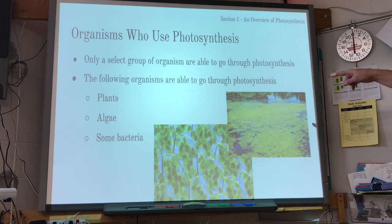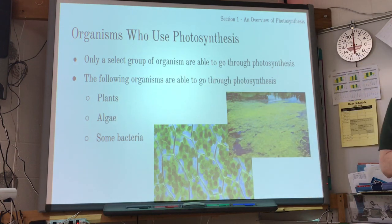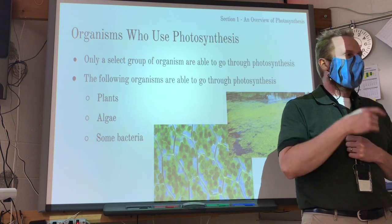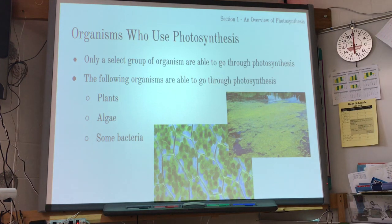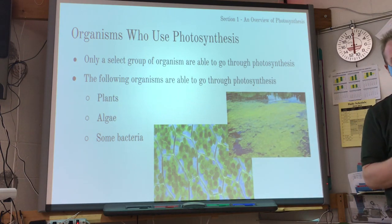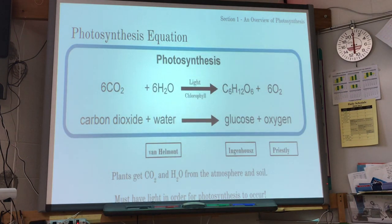Remember, organisms that go through photosynthesis are plants, algae, and some bacteria. Notice mushrooms aren't on this list — mushrooms are fungi, not plants. They don't photosynthesize; they're decomposers that break down dead, decaying stuff. They're heterotrophs, not autotrophs. Those three types of organisms — plants, algae, some bacteria — go through photosynthesis.